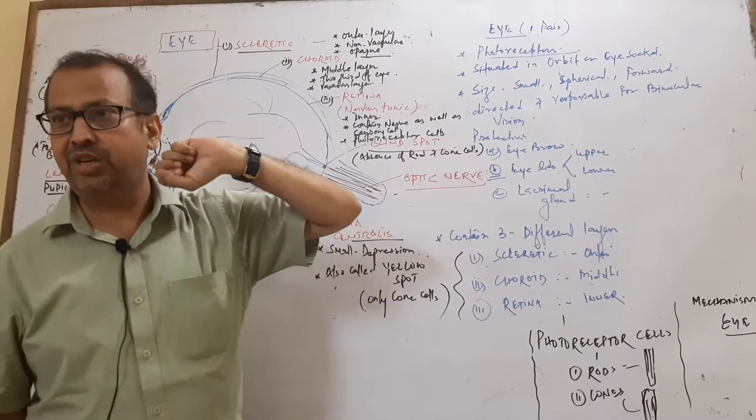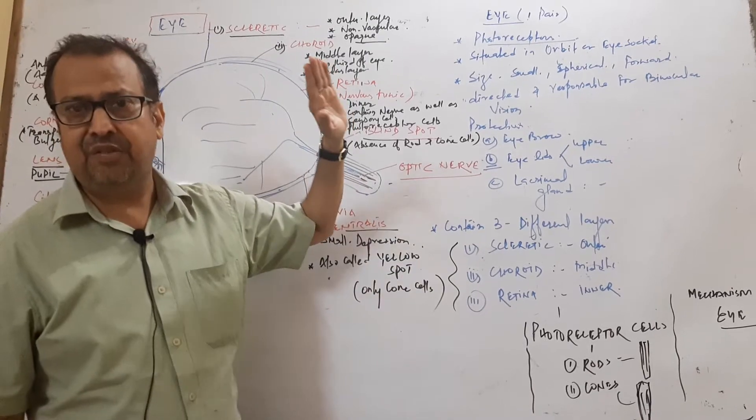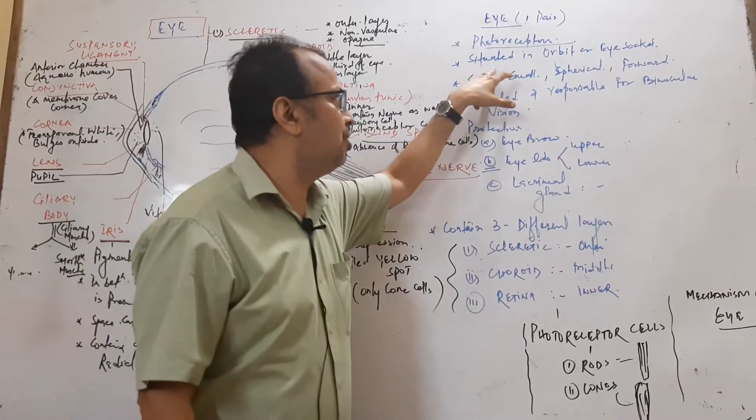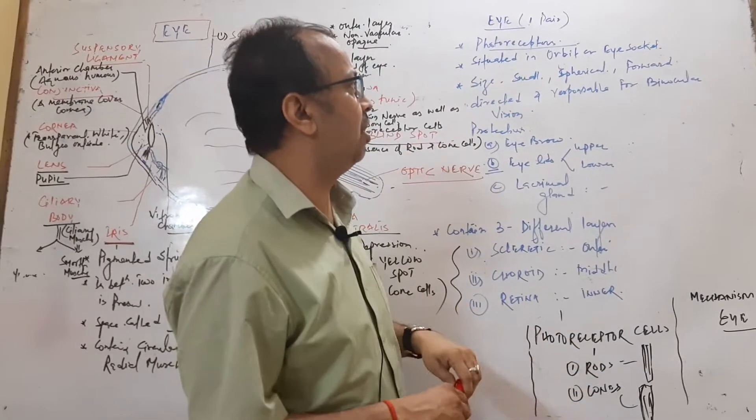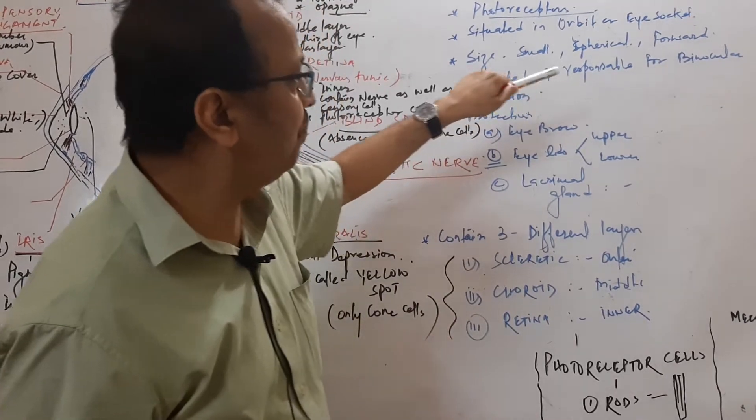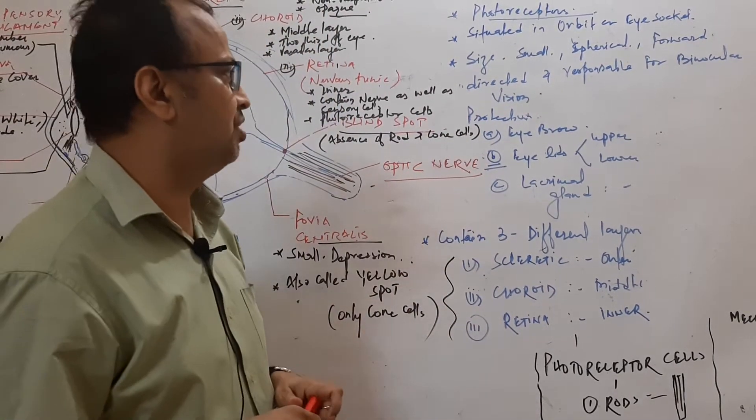In humans, one pair of eyes is present which is responsible for binocular vision. The eye is situated in the orbit or eye socket, and it is a small spherical and forward-facing structure.